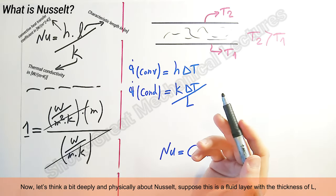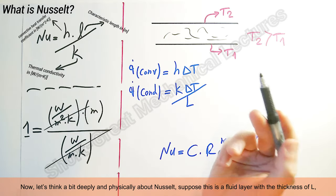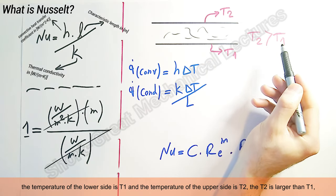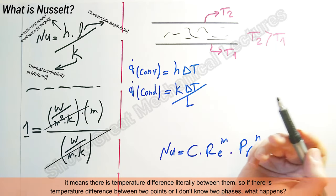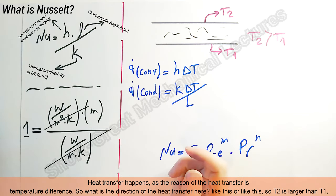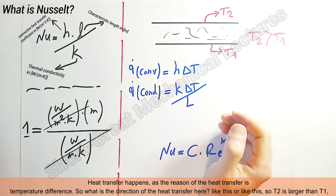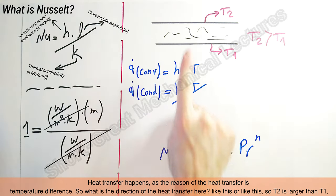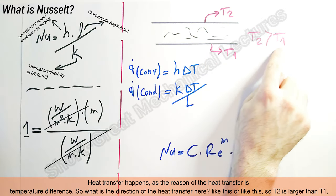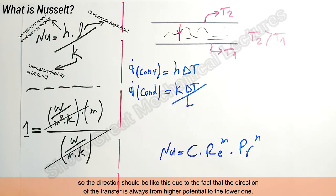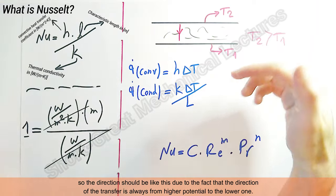Now let's think physically about Nusselt. Suppose we have a fluid layer with thickness L. The temperature of the lower side is T1 and the temperature of the upper side is T2, where T2 is larger than T1. This means there is a temperature difference between them, and where there is a temperature difference, heat transfer occurs. The direction of heat transfer goes from higher potential to the lower one.